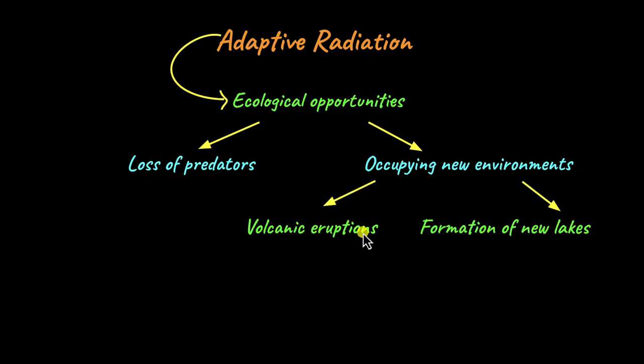Other types of new environment formation could include volcanic eruptions. How does a volcanic eruption cause a new environment to form? Many islands that have formed are actually the result of volcanic eruptions — the lava which falls on the ocean eventually cools down and leads to the formation of new land. Similarly, when a volcanic eruption takes place, a crater may be formed, and in that crater a lake may be formed. All these are examples of how new environments can be formed and then occupied by species.